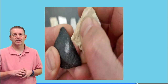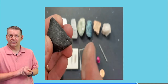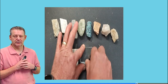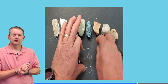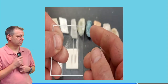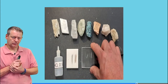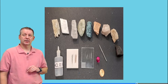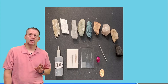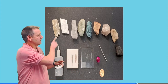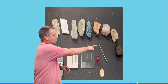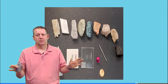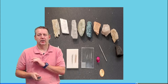Topaz and corundum are near the top of the Mohs scale. Corundum — which includes rubies and sapphires — is used in sandpaper and will scratch virtually everything. The only thing harder than corundum is diamond, which scratches all other minerals including corundum. The full scale runs from talc (1) to corundum (9), with diamond at 10.